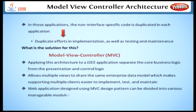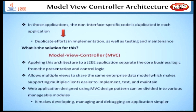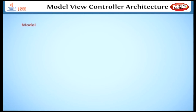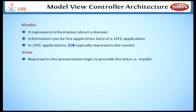A web application designed using the MVC design pattern can be divided into various manageable modules. This modularity makes developing, managing, and debugging an application simpler, because monitoring a small module is easier than monitoring a complete application. In the MVC design pattern, you can divide an application into three different parts. Model — this represents information about a domain. This information can be the application data of a J2EE application.